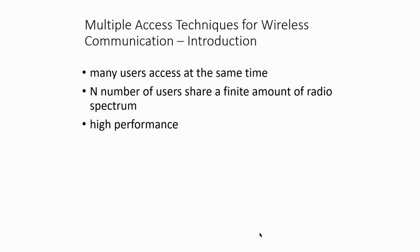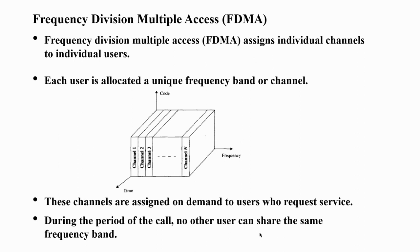In this lecture we are going to concentrate on FDMA — frequency division multiple access. In FDMA, each individual user is assigned an individual set of channels. Each user is allocated a unique frequency band. For example, channel one has been allocated a different set of frequency, channel two is allocated a different set of frequency — so each user is allocated one channel that operates at a different frequency band.